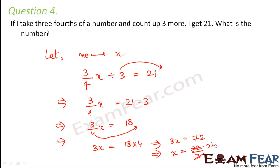Or X is equal to 72 divided by 3. So 3 to the 6. 3 to the 12. So X is equal to 24. So the number is 24.